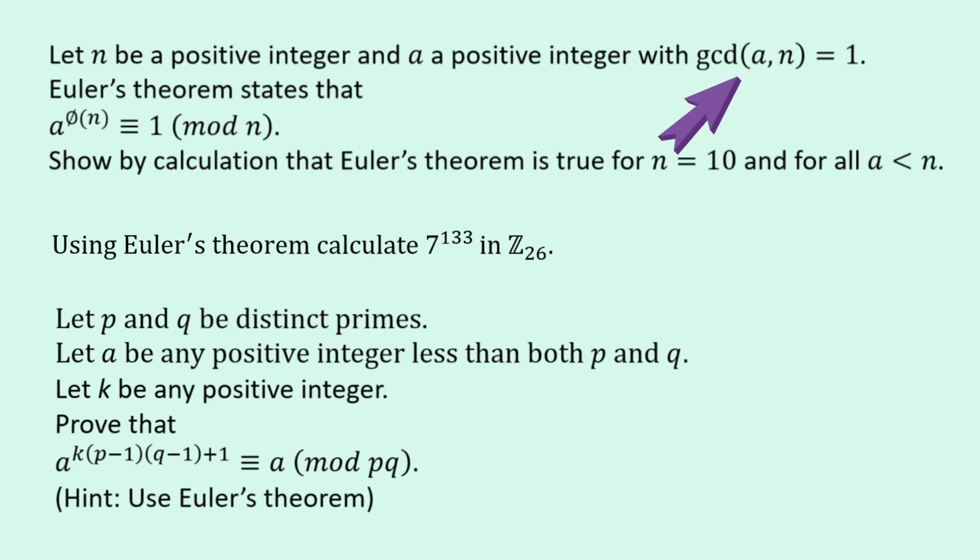This GCD up here stands for Greatest Common Divisor. You need to know that. This Greek symbol here, you need to know about the Euler-Totient function. And finally, this mod, you need to know about modular arithmetic.